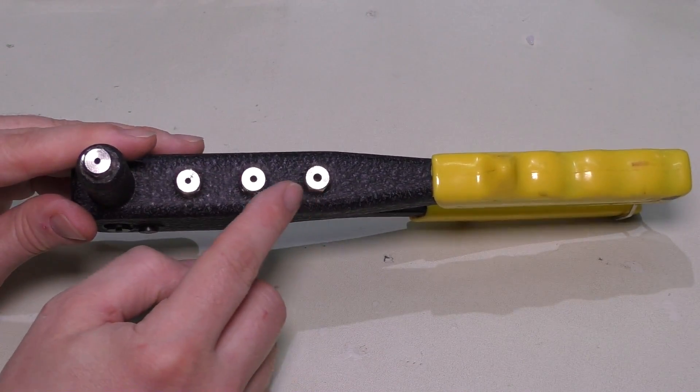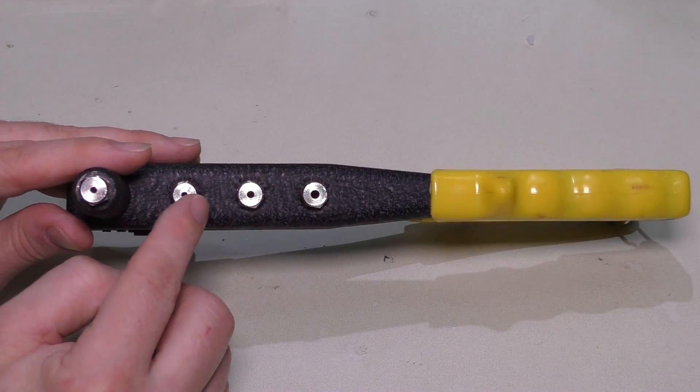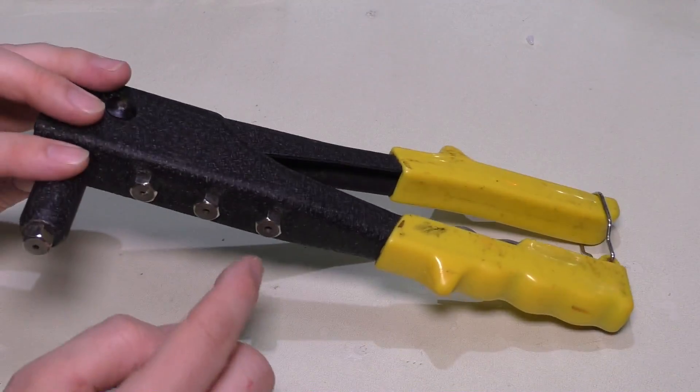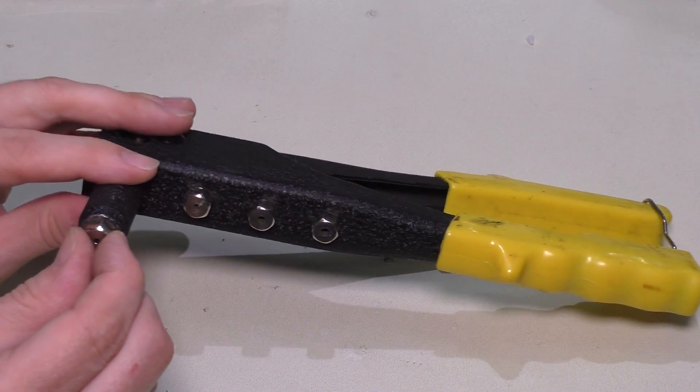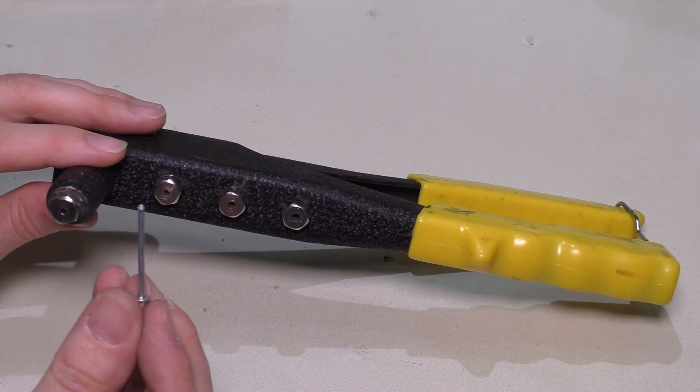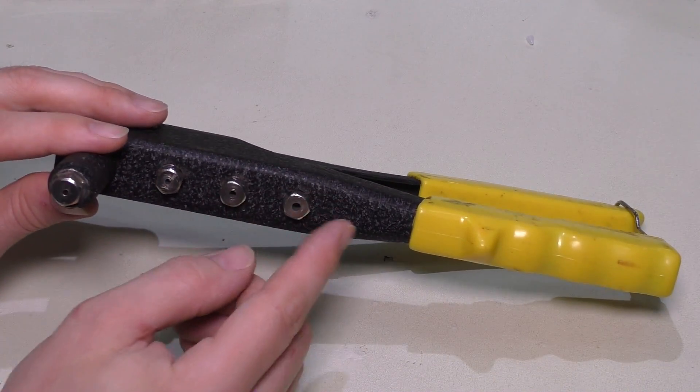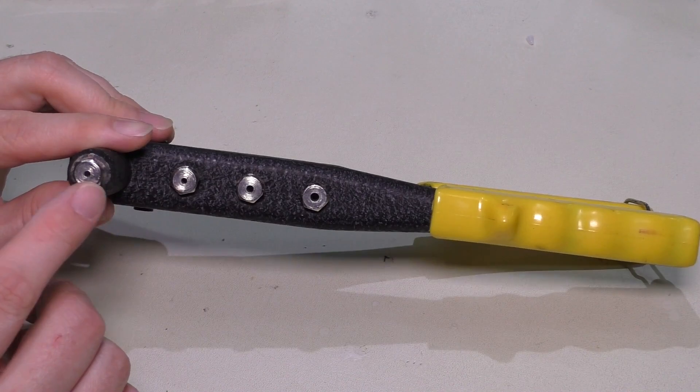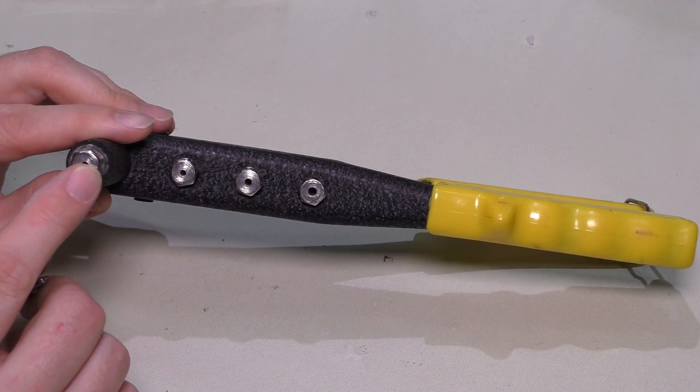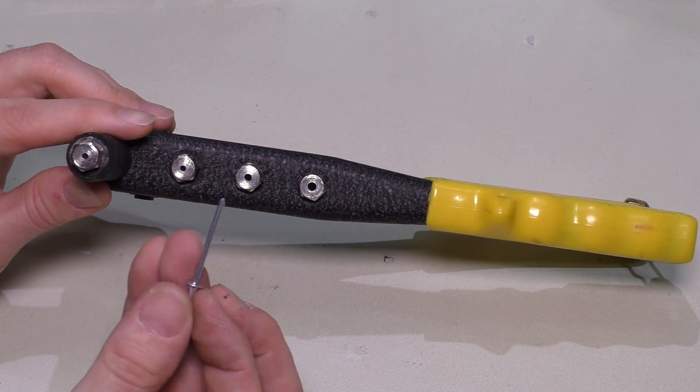I'm going to point out something. You notice that there are different sized heads on this, and there's a little wrench over here that you would use to remove this. Depending on what size rivet you're using depends on which size head you need. Now I've noticed with this particular gun, the smallest one never really fit anything that I had.